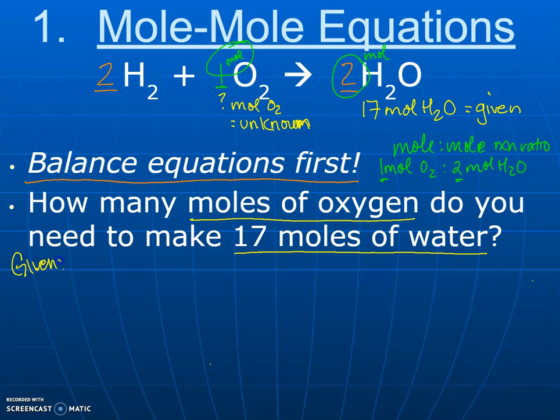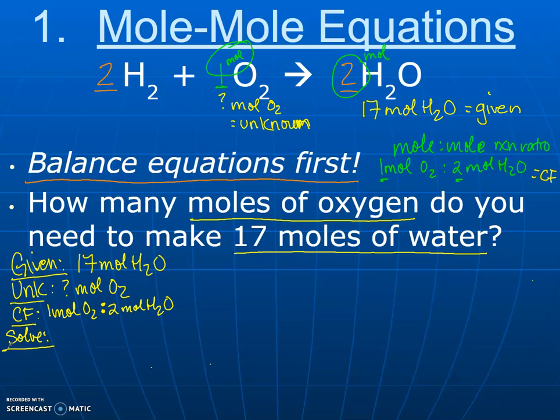Down below we are going to write everything out nicely for you. The given is the number that they give you in the equation: 17 moles of H2O. The unknown is going to be moles of oxygen. Our conversion factor CF is going to be one mole of O2 for every two moles of H2O, because you need to position that with dimensional analysis in order for units to cancel out. If you haven't seen the video where we talk about canceling out units, please make sure you do that before you go any further.